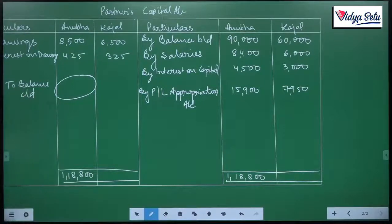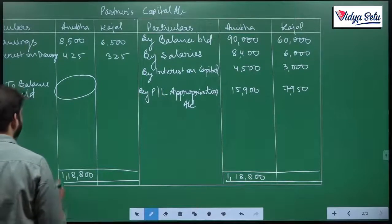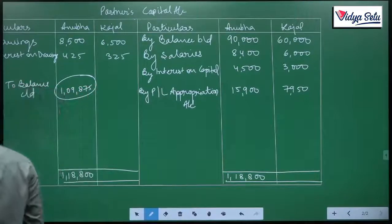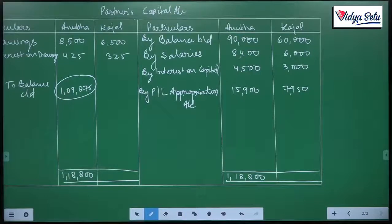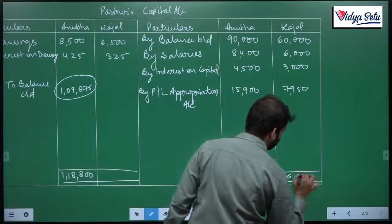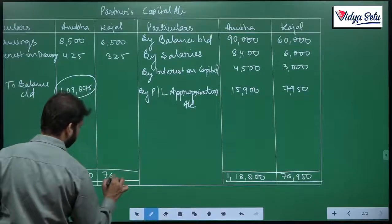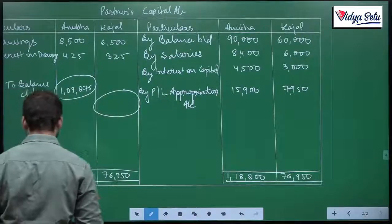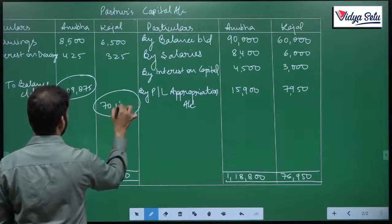Balance carried down minus drawings and interest. This comes to 109,875 and that comes to 76,950. The balance comes to 70,125.